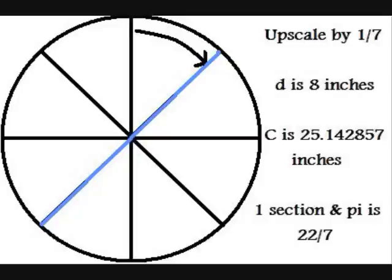And still, you end up with one section and pi being 22-sevenths. So, one of the things that you can extrapolate from all this is that when the diameter and the number of divisions are the same, one section is always pi units.